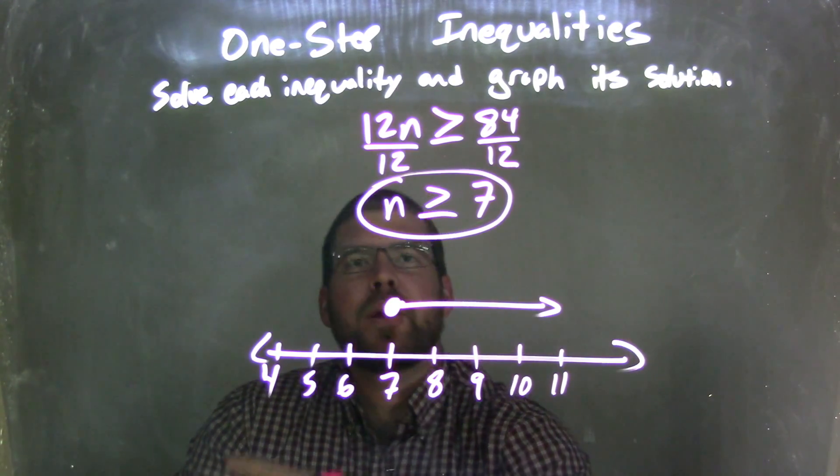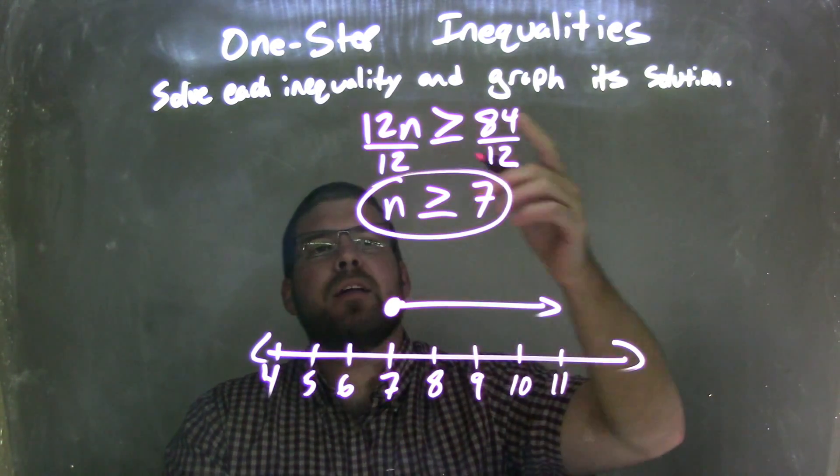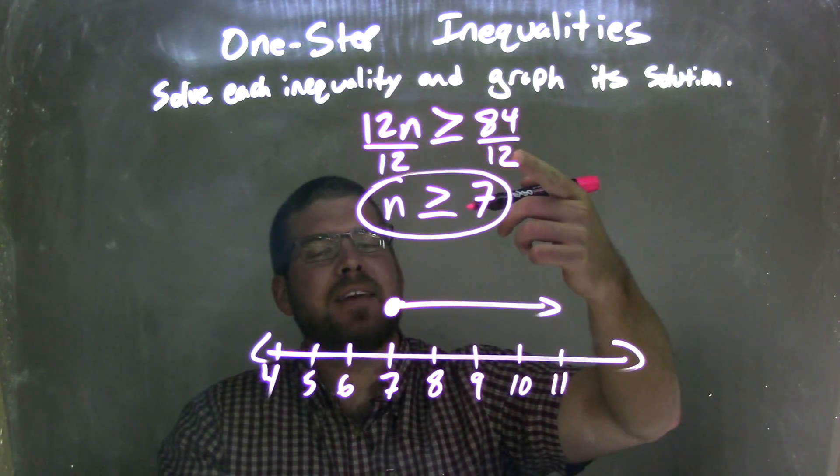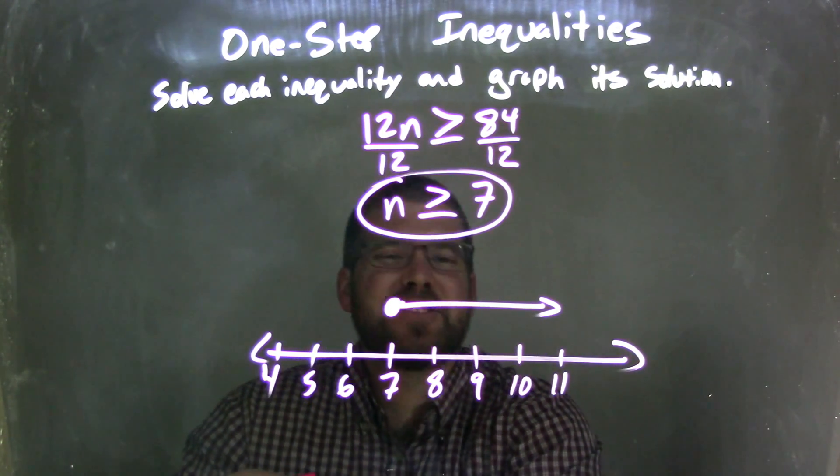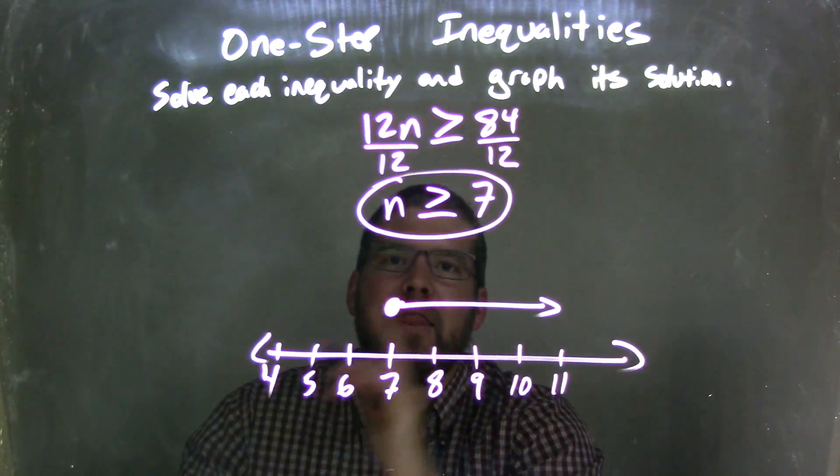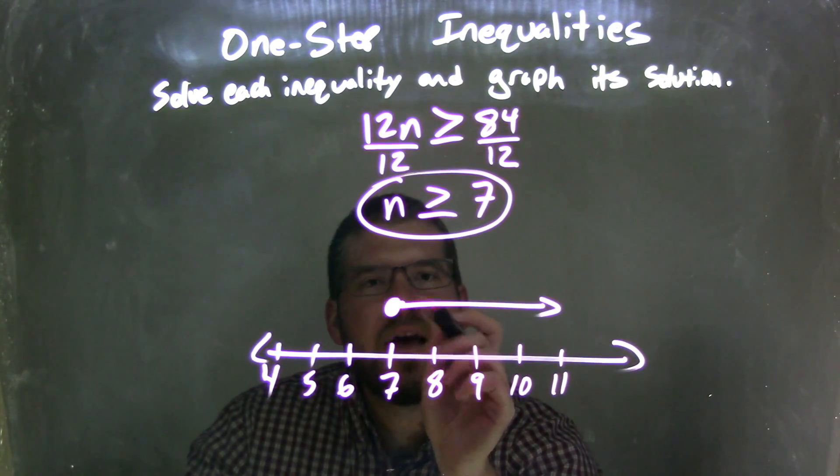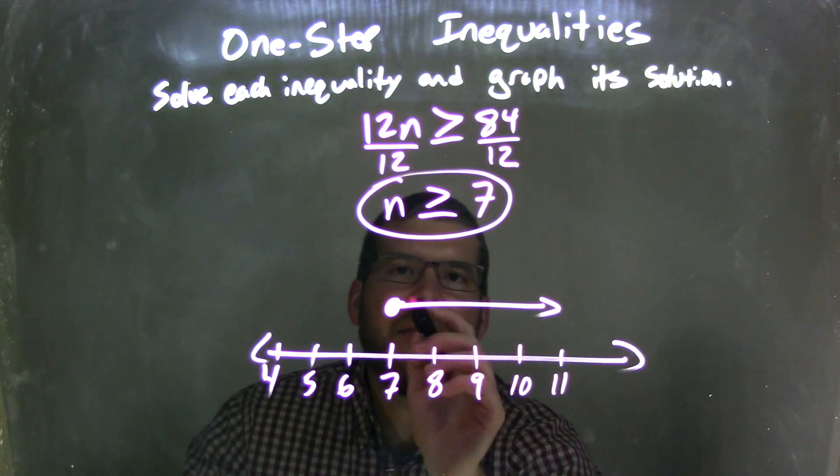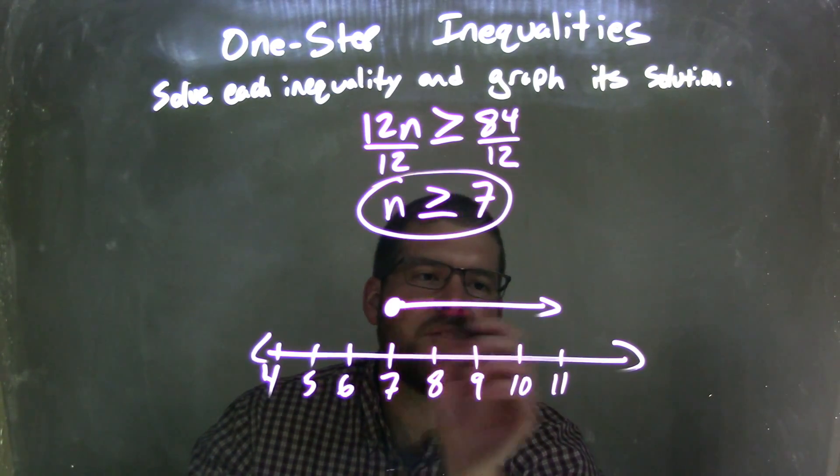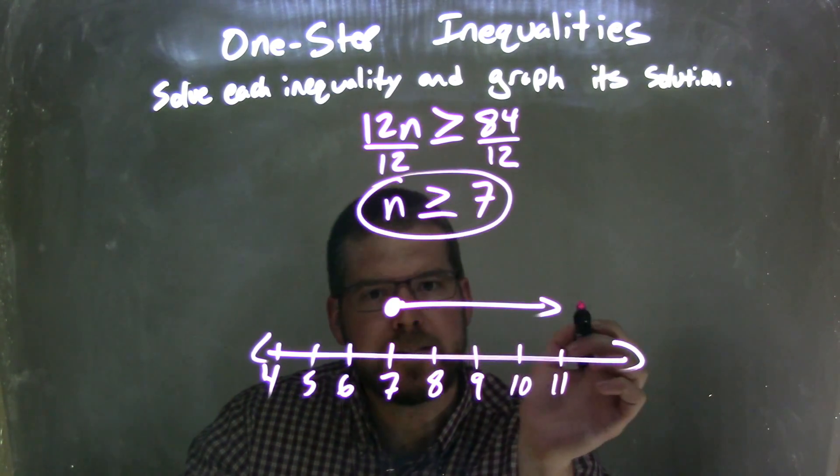So let's recap. We're given 12n is greater than or equal to 84. I divided by 12 on both sides to get n by itself, leaving me with n is greater than or equal to 7. Then from there, I needed to graph that. So I put a closed circle at 7 because of the equal to sign, and then the greater than sign made me shade to the right or draw my arrow to the right of that circle.